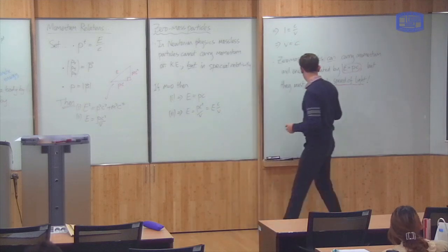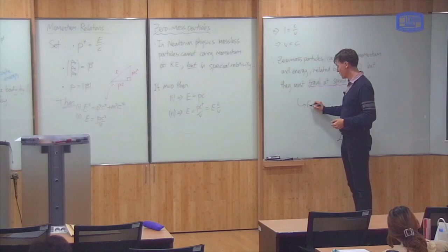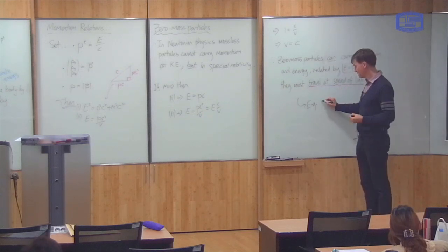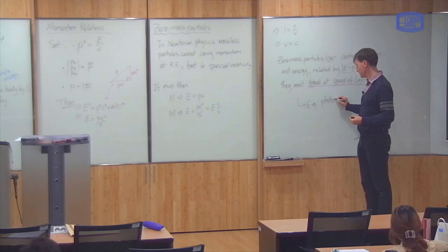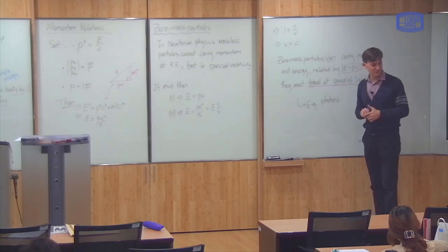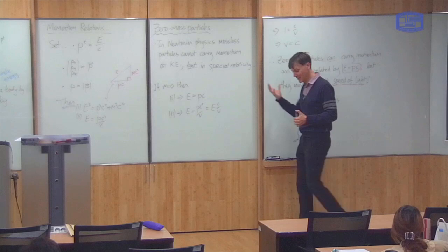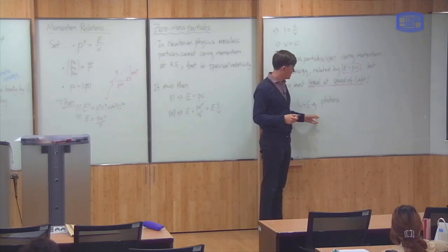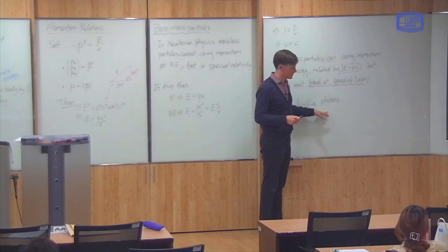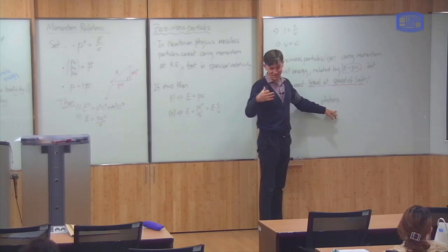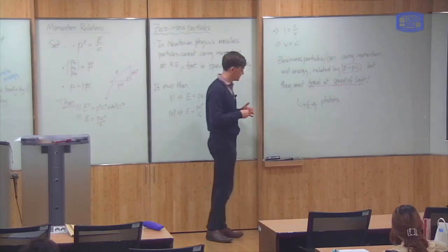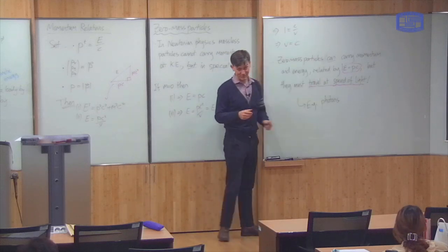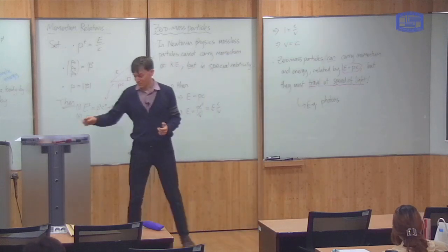So the most well-known of these, which you may have heard about before, are the particles of light, which are called photons. So in quantum mechanics, light itself is a particle or a quantum field, and these particles are known as photons. The excitation of the fields are known as photons. And they do satisfy these equations.